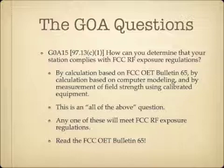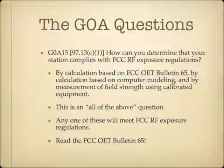How can you determine that your station complies with FCC RF exposure regulations? The answers are by calculation based on FCC OET Bulletin 65, by calculation based on computer modeling, and by measurement of field strength using calibrated equipment. This is an all-of-the-above answer on the exam. Any one or combination of these three methods will meet FCC RF exposure regulations. If you haven't read FCC OET Bulletin 65, you probably should — there's a link to it on the hamwhisperer.com website.